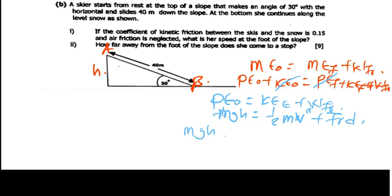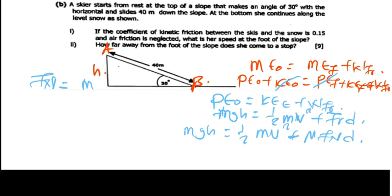We expand this as: MGH equals half MV squared plus mu times the normal force times distance. But remember, this object is on an incline, so the normal force FN equals MG cos theta. We also replace H using trigonometry: H equals the distance times sine theta.